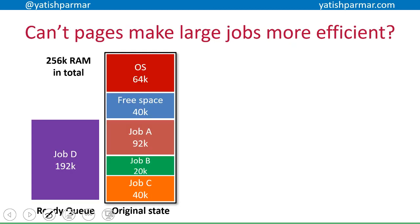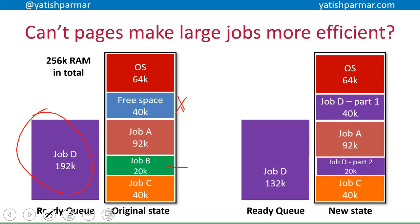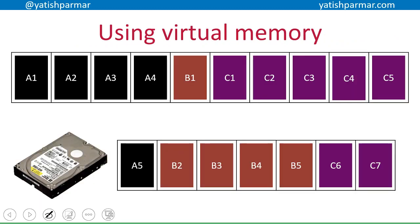Can pages make virtual memory more efficient? In our hypothetical computer with a 192k job D and only 40k of free memory, once job B finishes and frees up 20k, we can place 40k of job D into the first free space and 20k into the second. Now only 132k of job D needs to go into virtual memory — we're reducing reliance on virtual memory and improving computer performance.